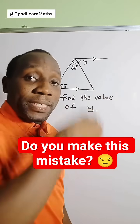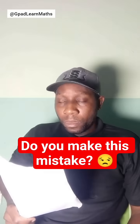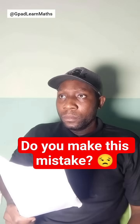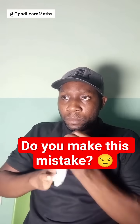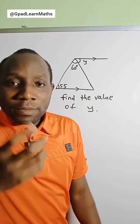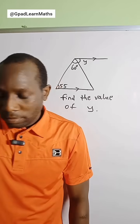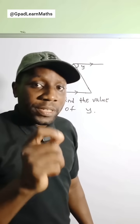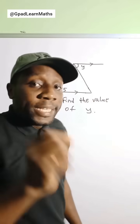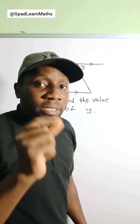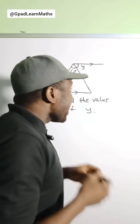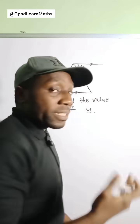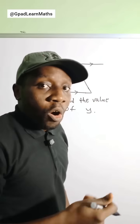Angle y is an exterior angle to this triangle, so to get the value of y I will have to add this angle to 55 degrees. My friend, leave that — y here is not an exterior angle to this triangle. It will only be an exterior angle if this line you see here is an extension of one of the sides of the triangle.